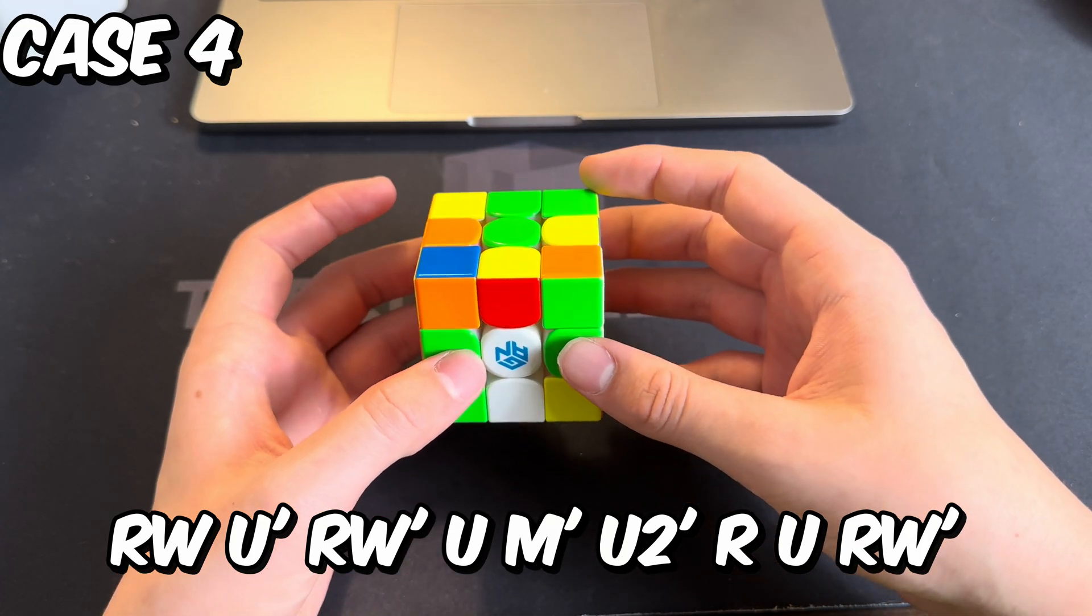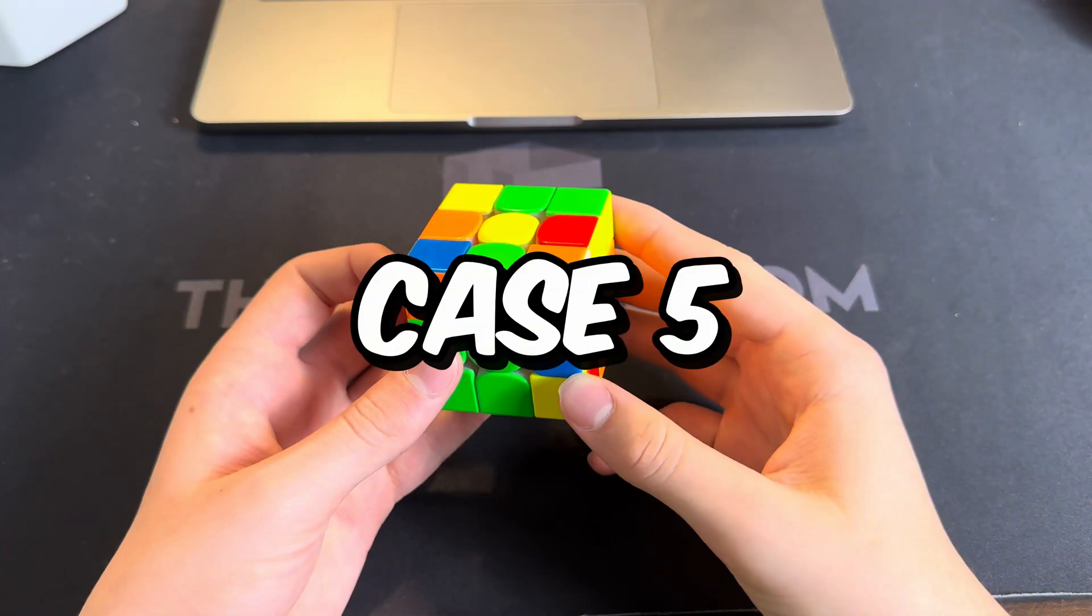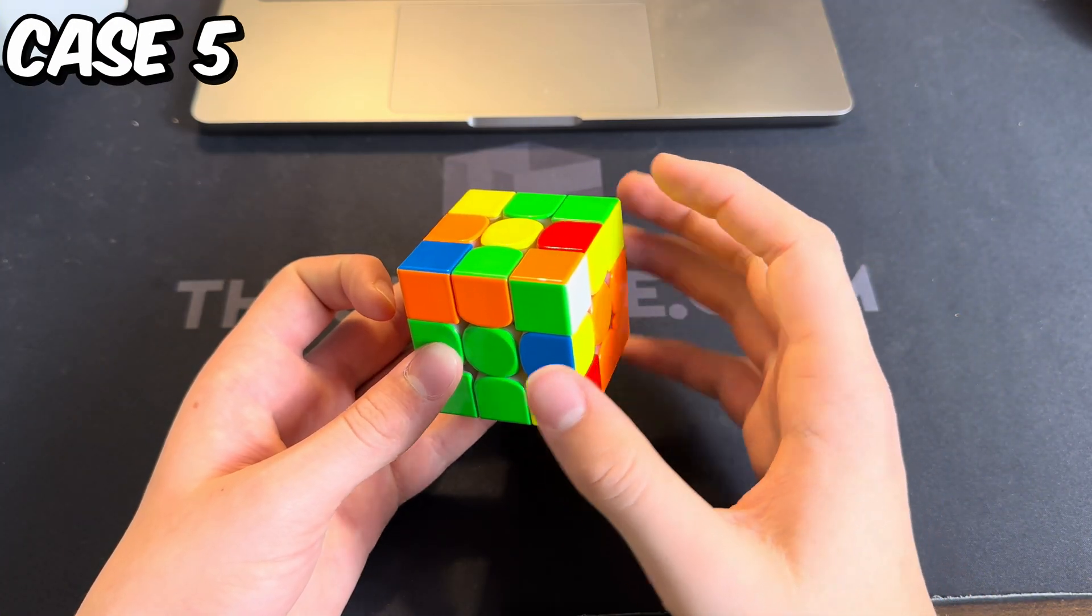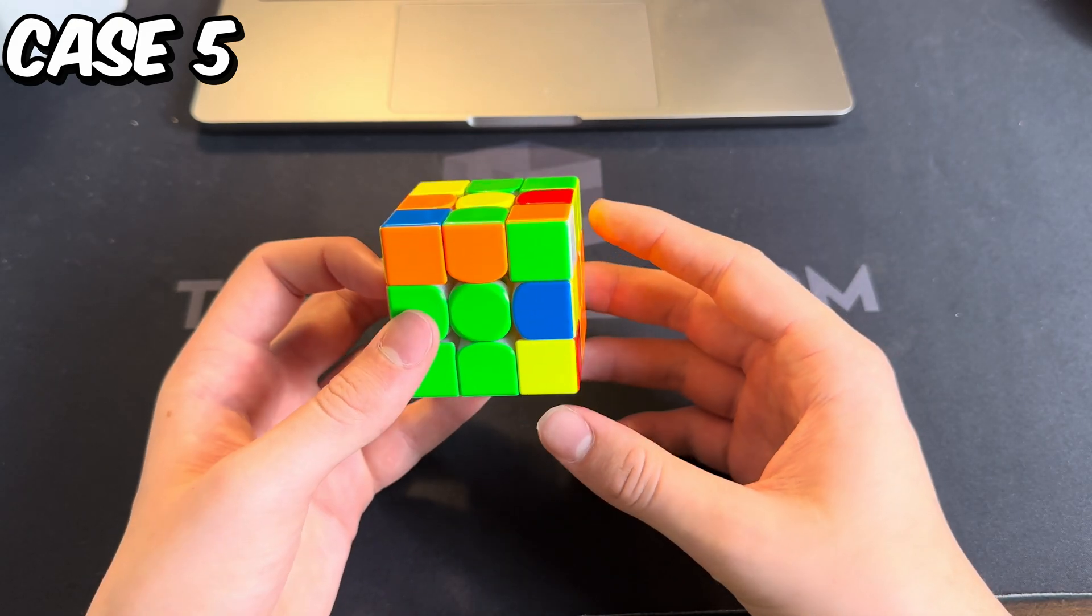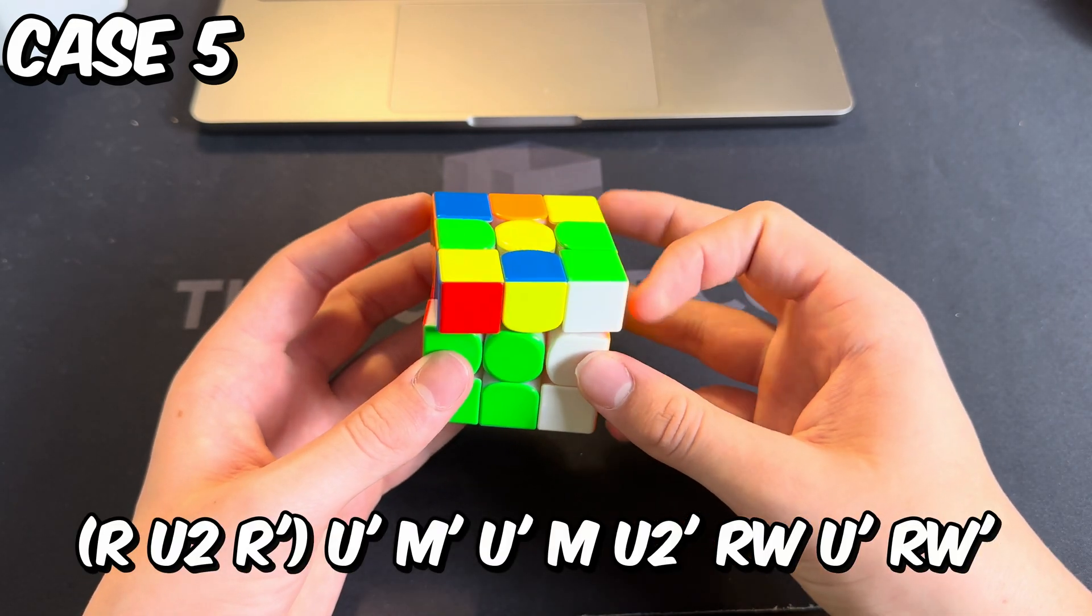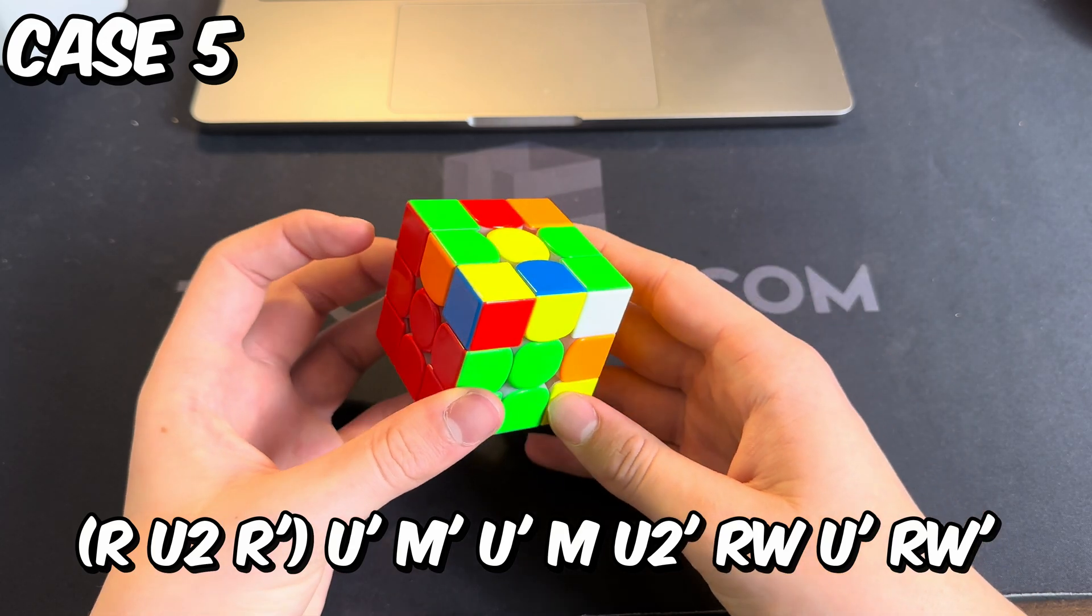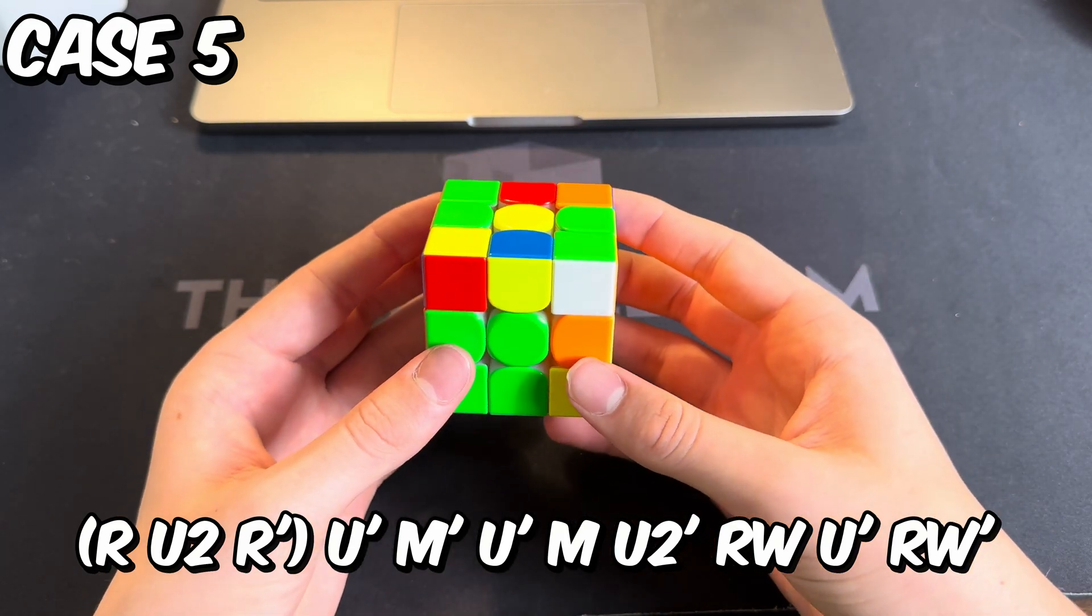For this case, you pretty much have the pair already made except the F2L edge is flipped. How you would solve it, you would go like this, setting up to this case from the last video.